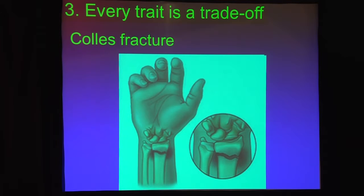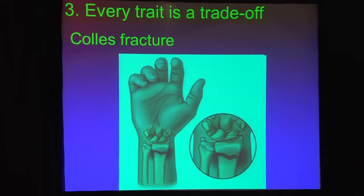You all know what a Colles' fracture is, but do you ever stop to think about why it's always a break right there at the head? The answer is that every single trait in the body is a trade-off. If that bone was thicker, you would try to throw something or twist your wrist and you wouldn't be able to do this wonderful movement. It's a trade-off — you could have it thicker, but at a price.